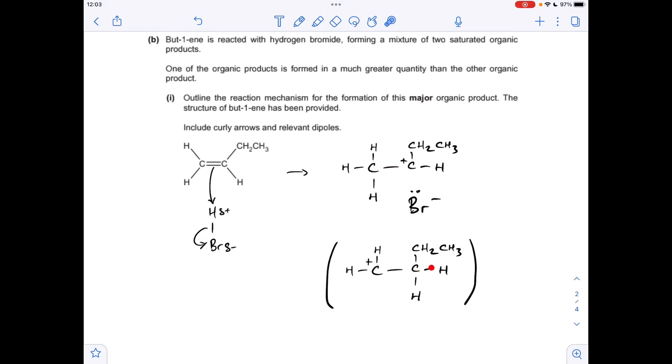This one here is going to lead to the major product, and that's because this is a secondary carbocation intermediate, whereas this one's only a primary one. So this isn't as stable as this. I'm kind of answering the next part of the question here, but I think it's worthwhile while I'm doing the mechanism to explain this.